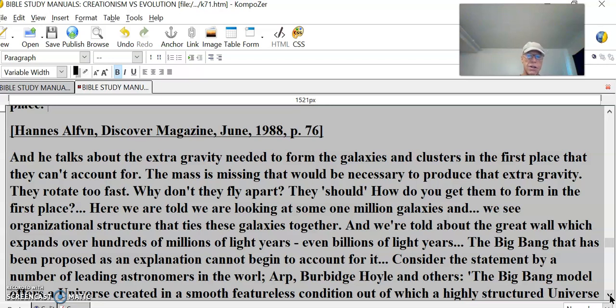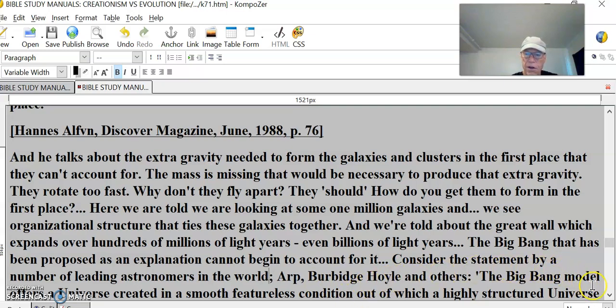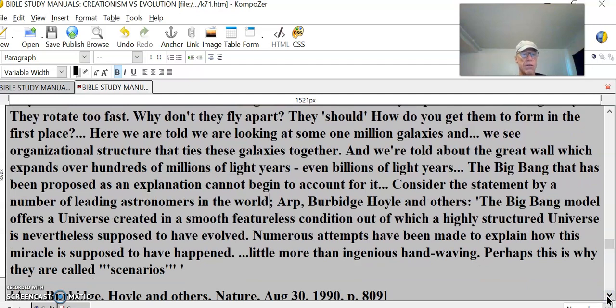Here we are told we are looking at some one million galaxies and we see organizational structure that ties these galaxies together. We're told about the Great Wall which expands over hundreds of millions of light years, even billions of light years. The Big Bang that has been proposed as an explanation cannot begin to account for it. Consider the statement by a number of leading astronomers in the world. The Big Bang model offers a universe created in a smooth, featureless condition out of which a highly structured universe is nevertheless supposed to have evolved. Numerous attempts have been made to explain how this miracle is supposed to have happened, little more than ingenious hand-waving. Perhaps this is why they are called scenarios.